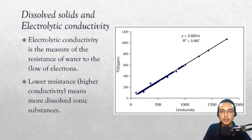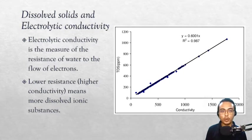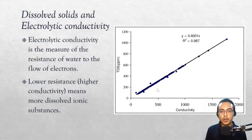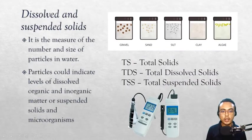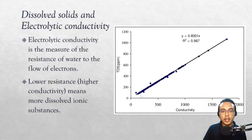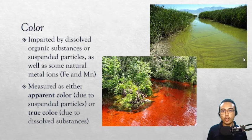Electrolytic conductivity measures the resistance of water to the flow of electrons. A high conductivity value means many ionic substances are dissolved in the water, while a low value means very few total dissolved solids. TDS meters actually measure electrolytic conductivity and convert it to TDS using this correlation — the higher the conductivity, the higher the total dissolved solids.